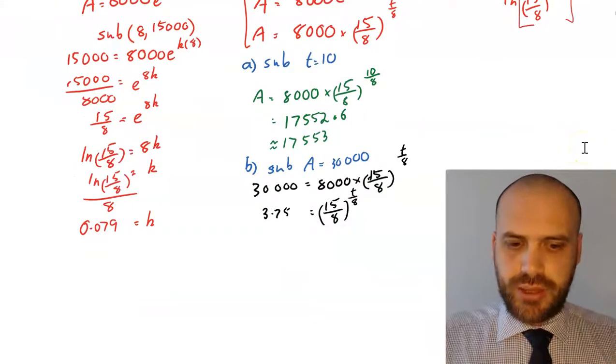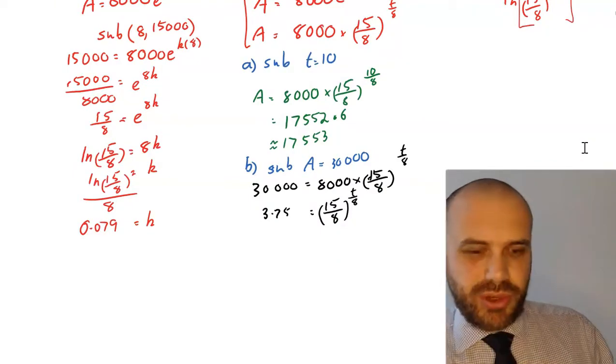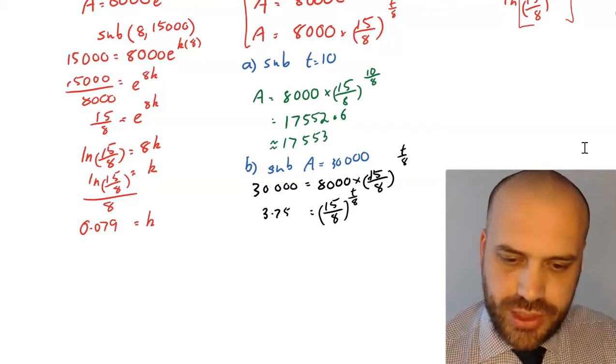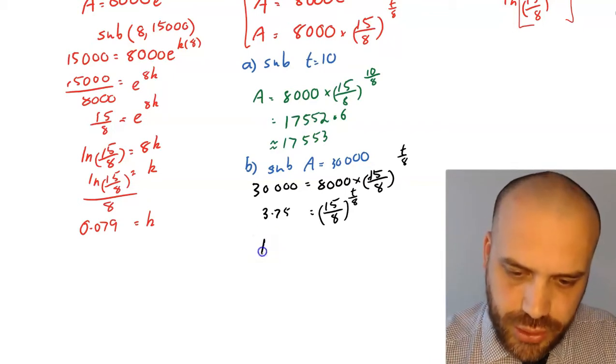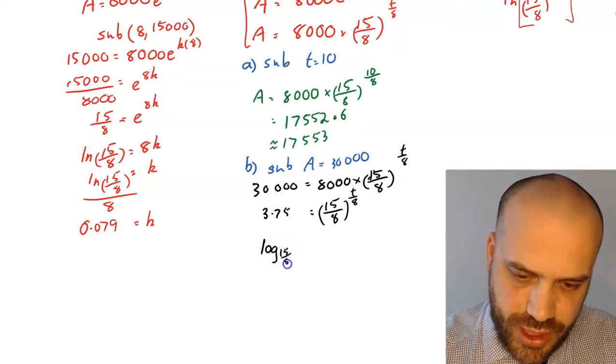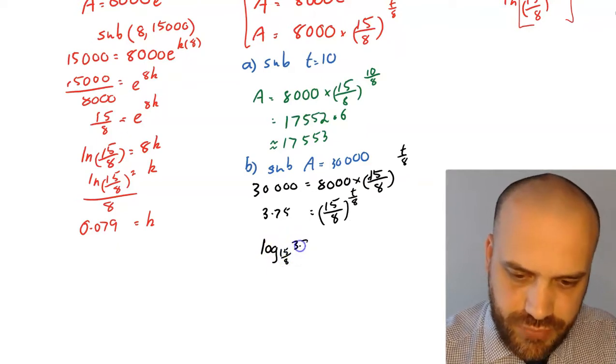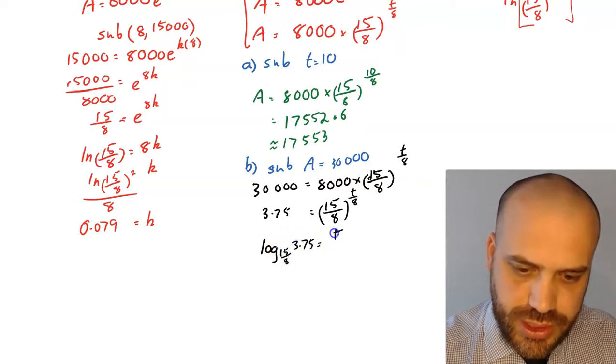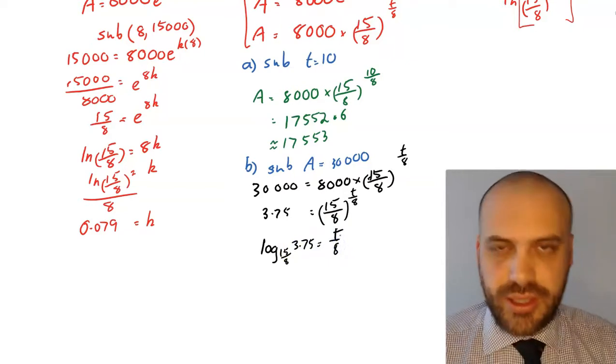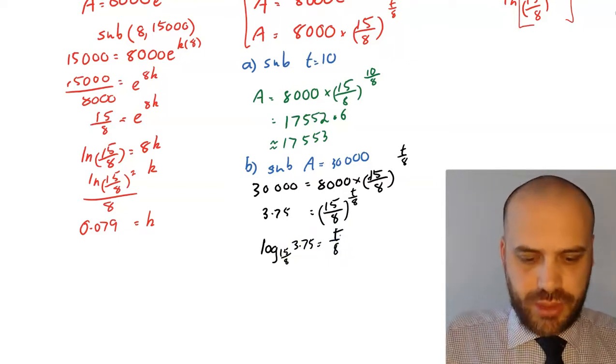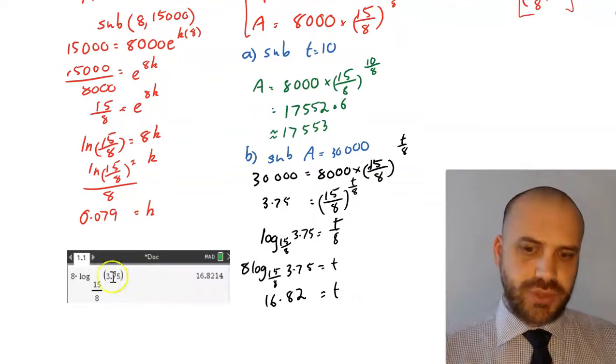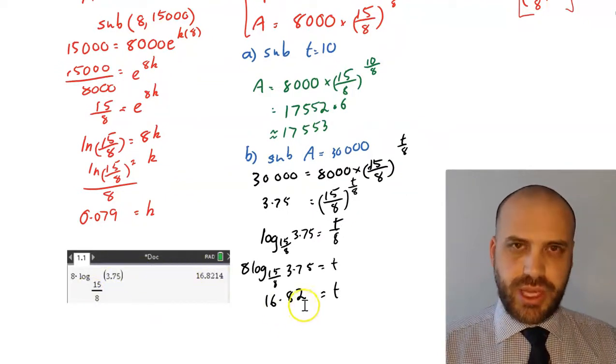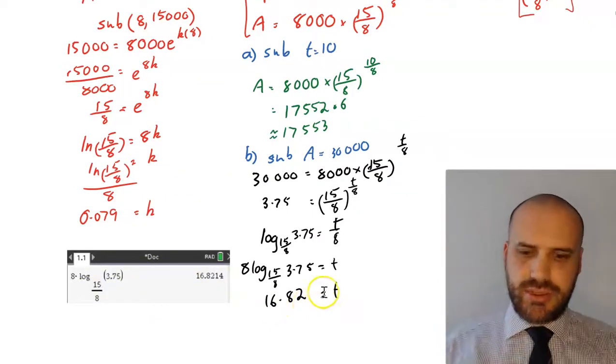So I've subbed that in now. Now how can I go from here? Well, your calculator will let you do a log to any base. So I'm going to write this in logarithmic form, log base (15/8) of 3.75 equals t/8. And then obviously I can just multiply by 8. You can see I've typed it into my calculator, I've got 16.82, t equals 16.82.